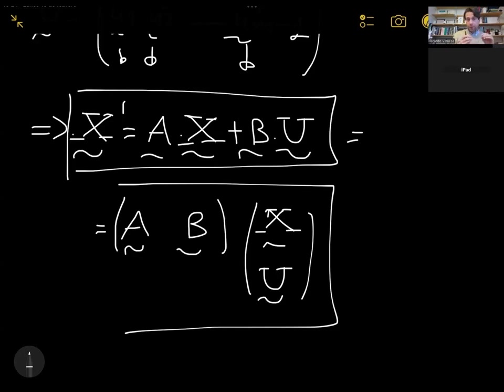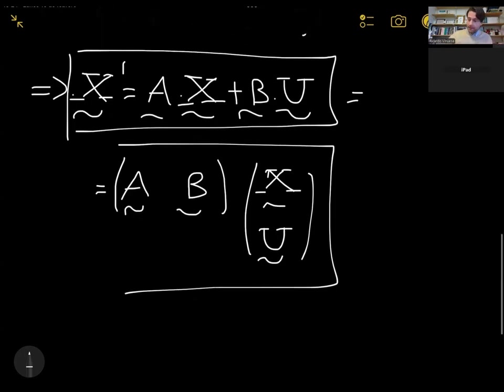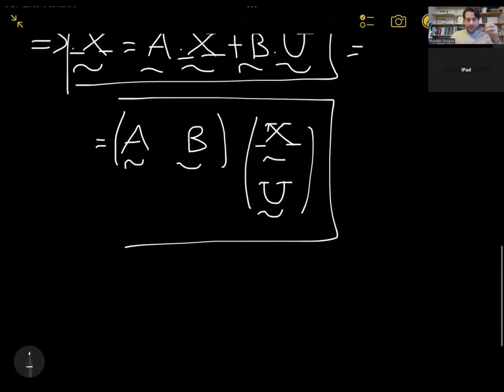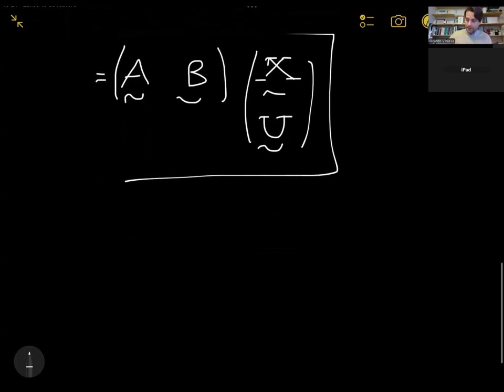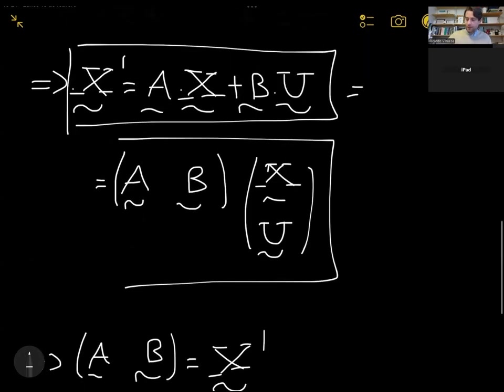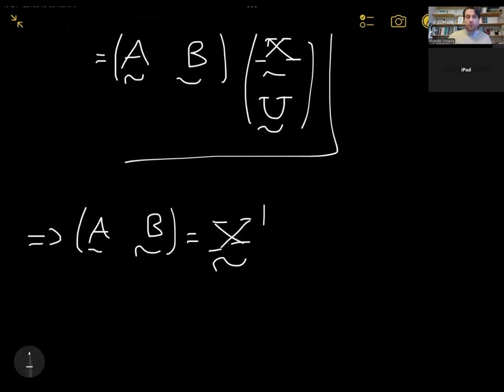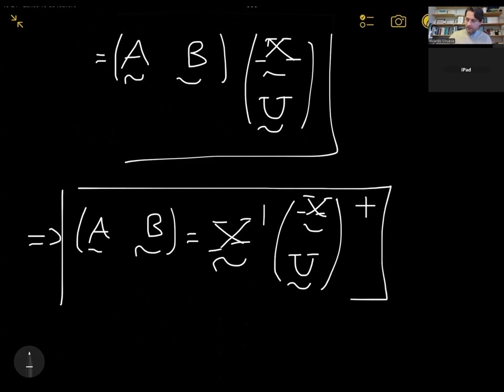This means that if I want to find now not only the linear operator A, but the linear operators A and B, which correspond to the original dynamics and to the inputs that I'm adding to my system, then I can basically solve this linear system by inverting the matrix X and the matrix U. So I will use the pseudo-inverse as usual, in such a way that my linear operators A and B are basically X' post-multiplied on the left-hand side by the pseudo-inverse of the block matrix [X; U]. And this is going to be equation star, which I will use later on.